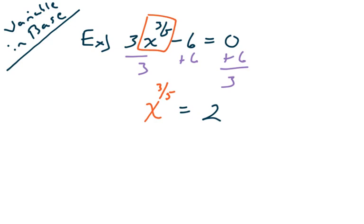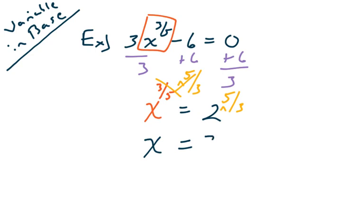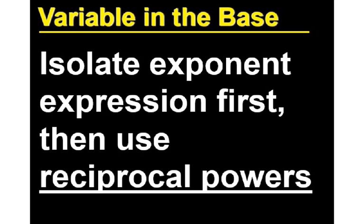Agent number one, get out your reciprocals, because you're going to raise both sides to the reciprocal power. Whenever x is in the base, we raise both sides to the reciprocal power and we will have solved for x. Two to the five-thirds is something you can do on your calculator — type it in carefully to get 3.175. When the variable is in the base, isolate first, then use reciprocal powers.